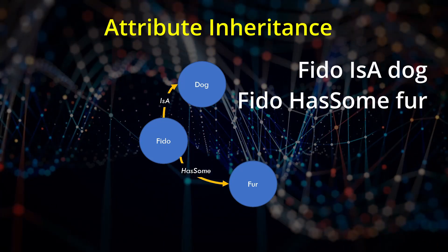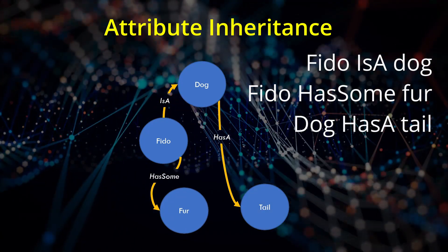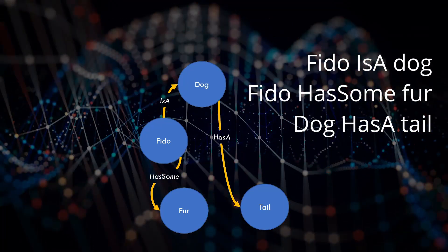I introduced attribute inheritance. By adding the statement dogs have tails, you immediately know that Fido has both fur and a tail.